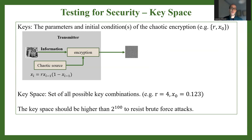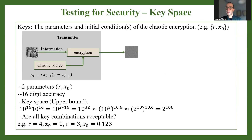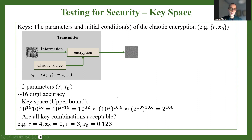For this example with the logistic map, we have two parameters. Since we are talking about digital implementations, I can assume an accuracy of 16 different digits. So all the possible combinations is 10 to the 16th multiplied by 10 to the 16th, which overall is 10 to the 32.